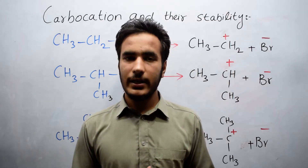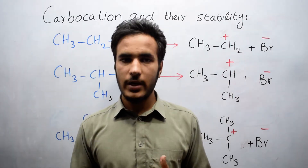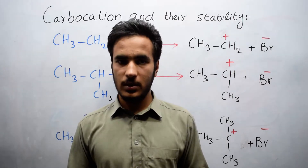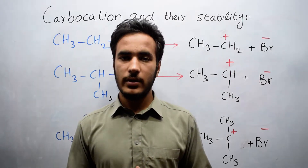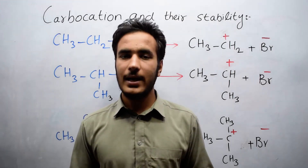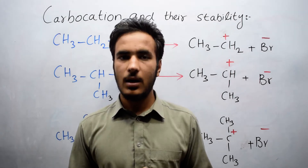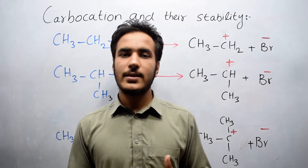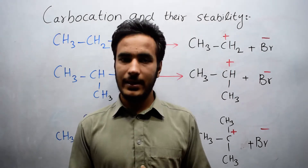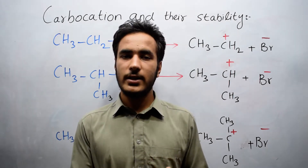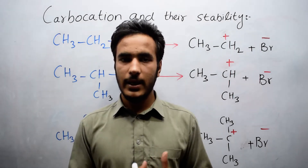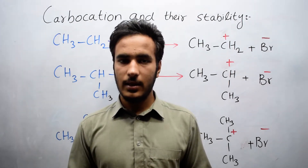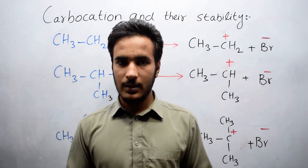Alkyl halides are those organic compounds in which one hydrogen is replaced by a halogen group. The compound formed is known as an alkyl halide, or also as a haloalkane, because it is derived from an alkane where one hydrogen is replaced by a halogen atom.